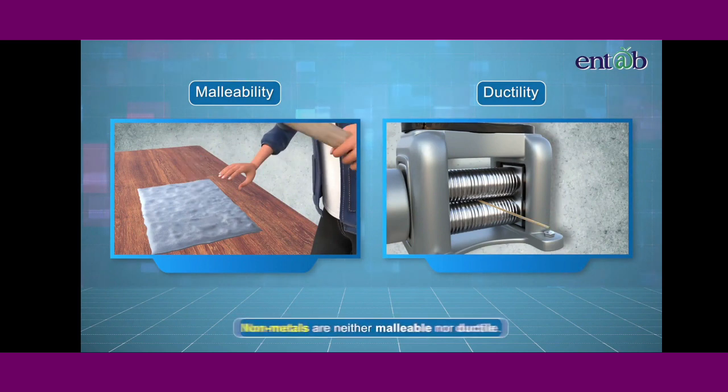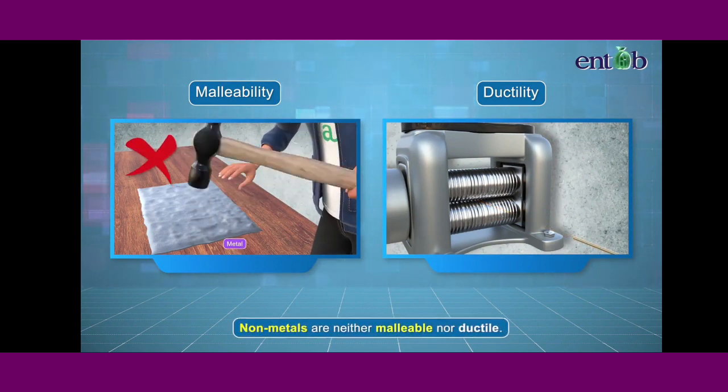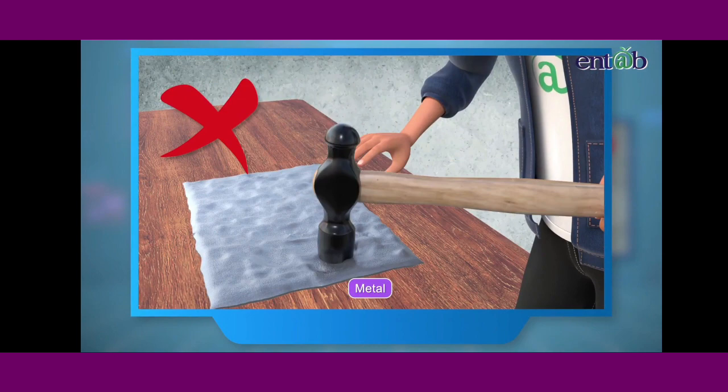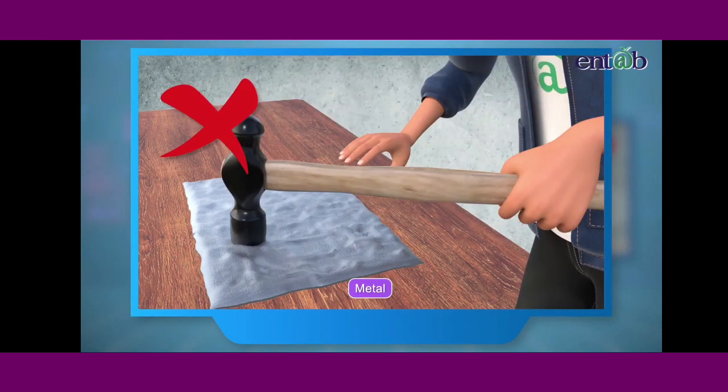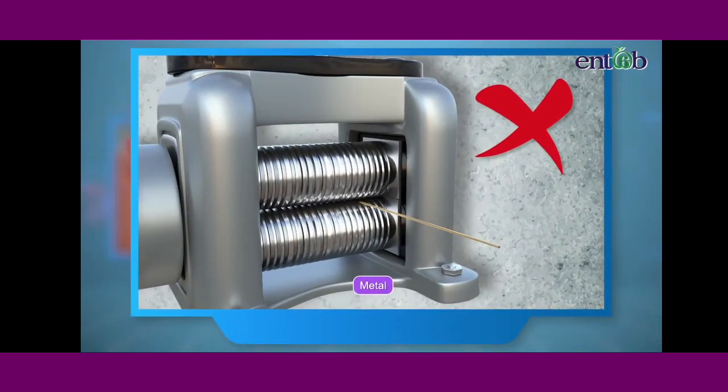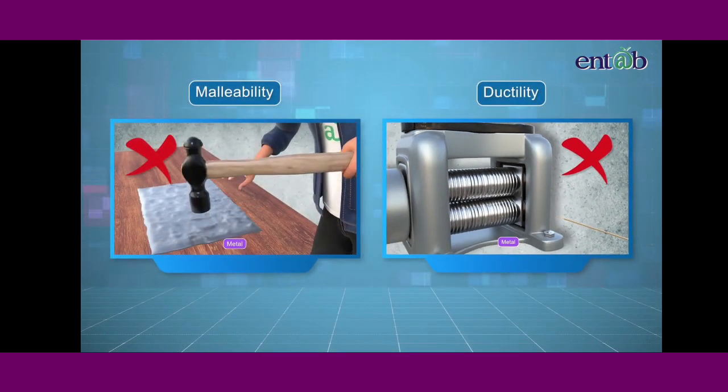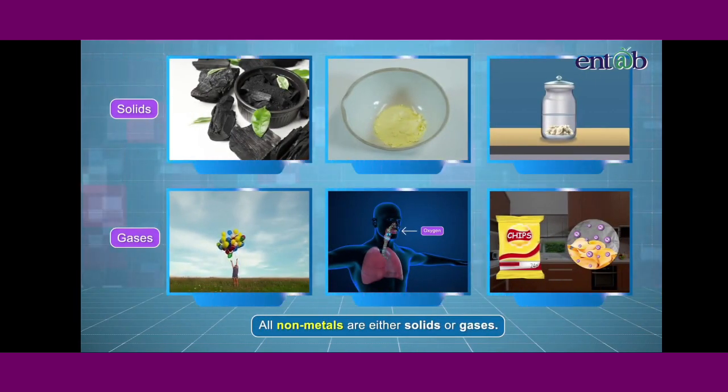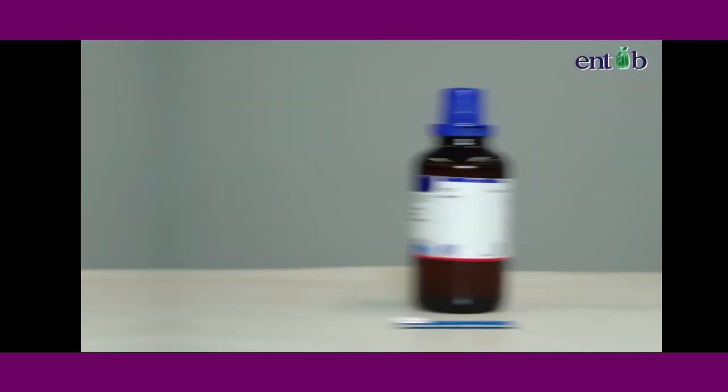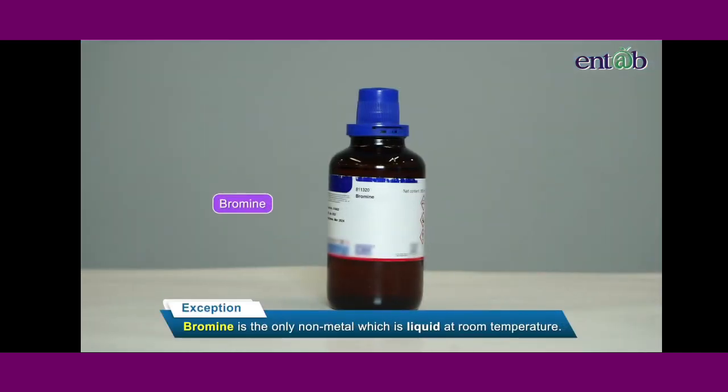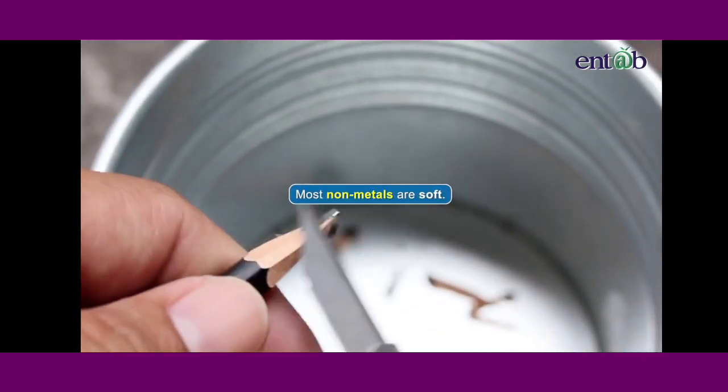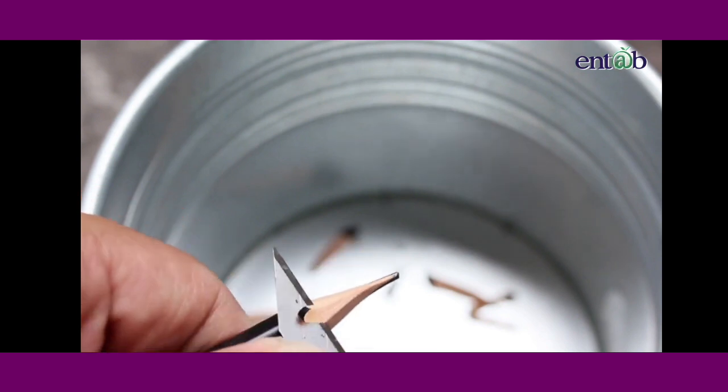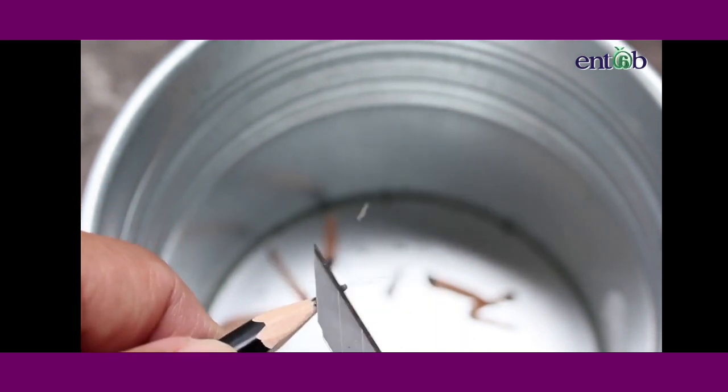They cannot be beaten into thin sheets and they cannot be drawn into wires as they easily snap on being stretched. All nonmetals are either solids or gases except bromine which is a liquid at room temperature. Most nonmetals are soft and can easily be cut with the help of a knife.